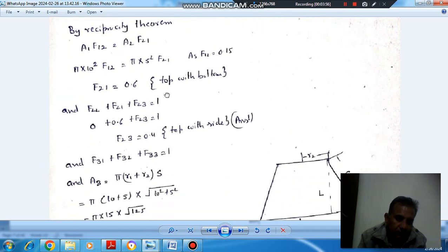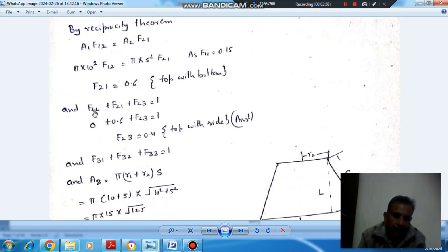Now considering surface 2, the summation of all the possible shape factors will be 1, so F22, F23, and F21 should be equal to 1. 2 cannot see itself so F22 is 0, and F21 we have calculated as 0.6. So this is the shape factor of top with side, F23 is 0.4.